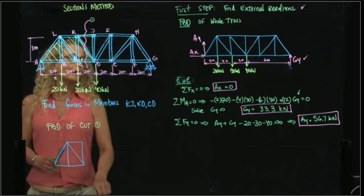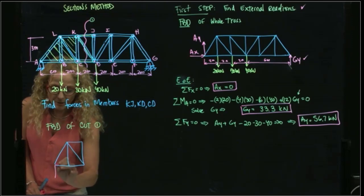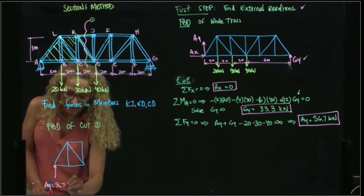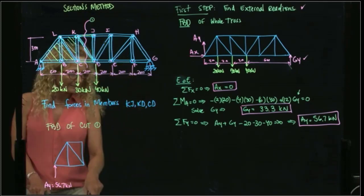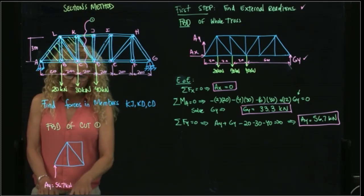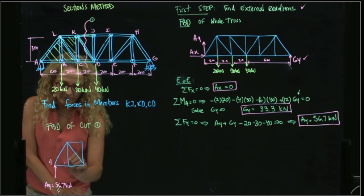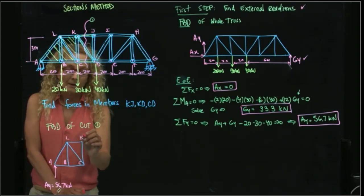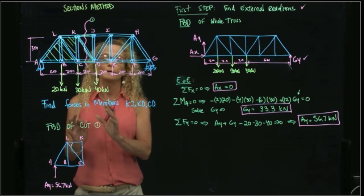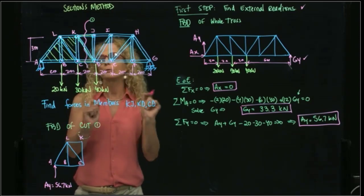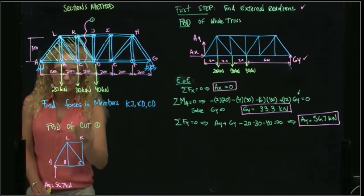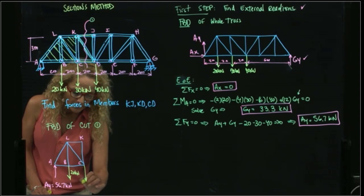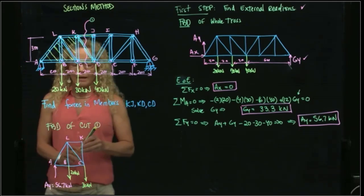I cannot forget my external forces that are already known: AY, which is 56.7 kilonewtons. I have to put my external forces. Points are A, B, C, L, and K. All the time spent doing a good free body diagram helps avoid errors. I have a force of 20 kilonewtons at B and another force of 30 kilonewtons at C.